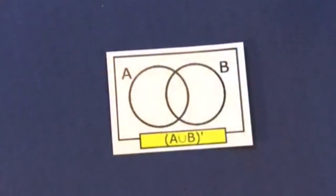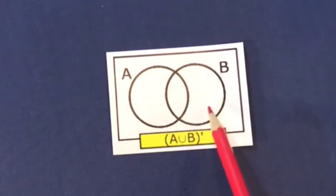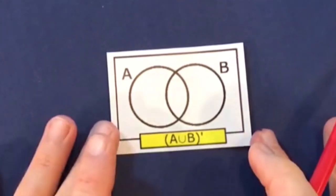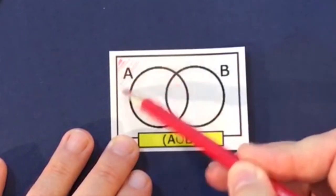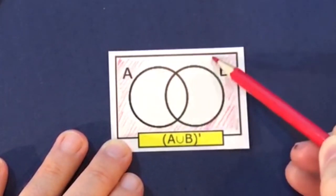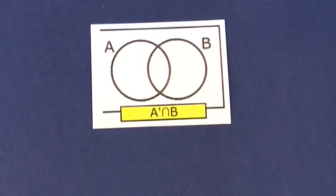Let's look at some questions from the online exercise. This one has brackets — and as with order of operations, we do what's inside the brackets first. Inside we've got A union B, and outside the brackets is the complement sign, sometimes called prime or dash. It means everything not in A union B — everything outside that region, but still within the universal set.